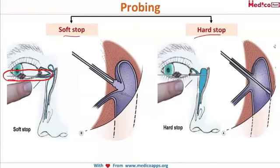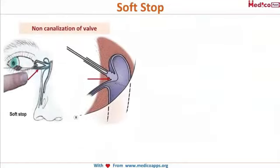The soft stop and hard stop refer to the consistency you feel when inserting the lacrimal probe into the tear drainage system. A soft stop indicates non-canalization of the valve — congenitally, a valve is present which should canalize by birth, and if it does not, it gives a soft stop when probing. This applies to blockage of the inferior canaliculus, the superior canaliculus, and the common canaliculus.